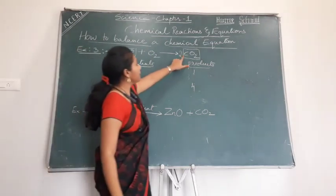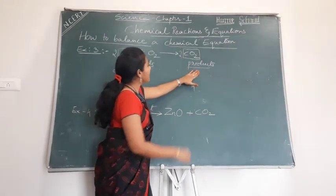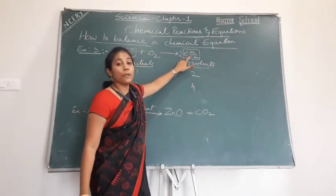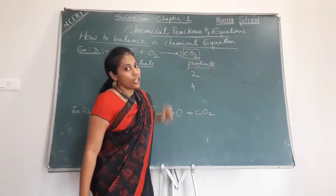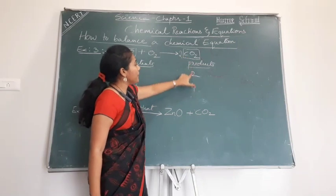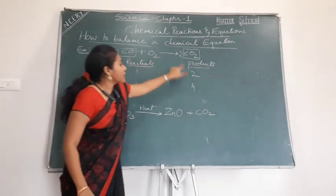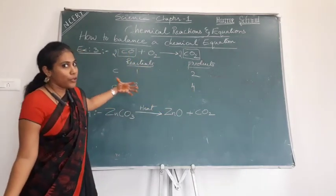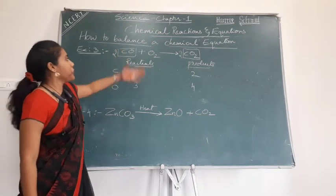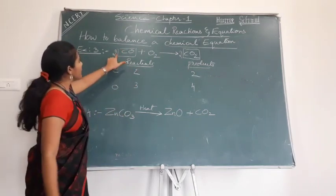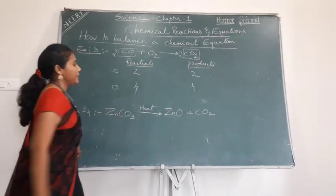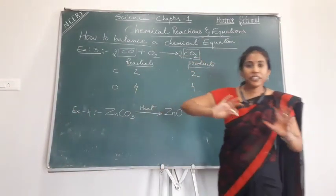Once you put 2 in front of CO, that coefficient applies to all elements in the molecule — carbon becomes 2 and oxygen becomes 2 × 1 = 2. But then carbon on the reactant side is 2 while product side still has 1 carbon, and oxygens are 4 vs. 3. So place a 2 in front of CO₂ on the product side as well. Now carbon: 2 = 2. Oxygen: 2 + 2 = 4, and 2 × 2 = 4. Balanced.